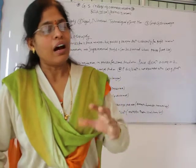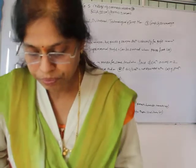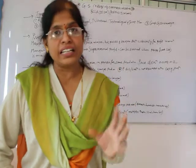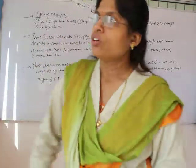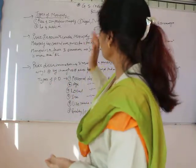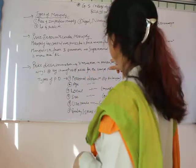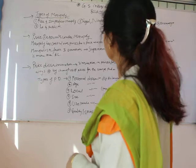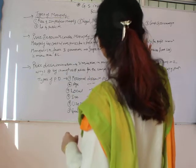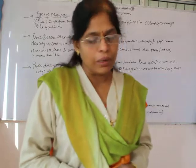Today we will go through different types of monopoly. There are three to four types: first is pure and imperfect monopoly; second is legal, natural, technological (also called technical), and joint monopoly; third is simple and discriminating monopoly; and lastly, private and public monopoly.